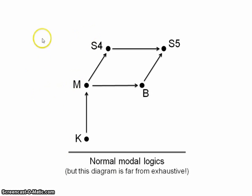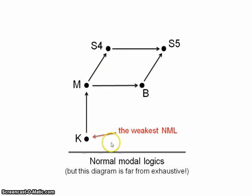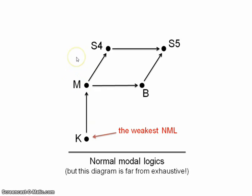K is the weakest normal modal logic — not just the weakest one we've examined, it's the weakest one period. Every other normal modal logic is an extension of K. In the next few videos, we'll examine some non-normal modal logics. And that's just about all I wanted to talk about here.